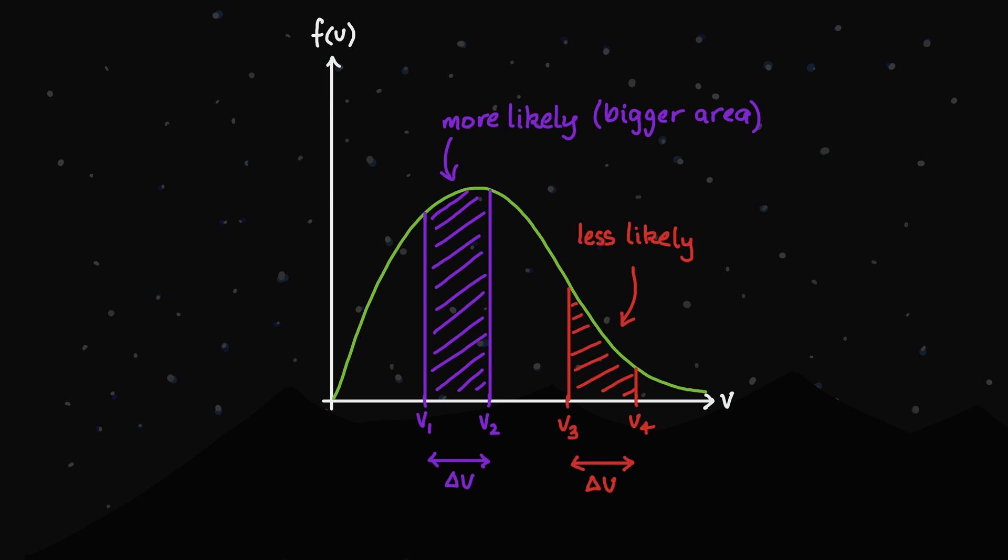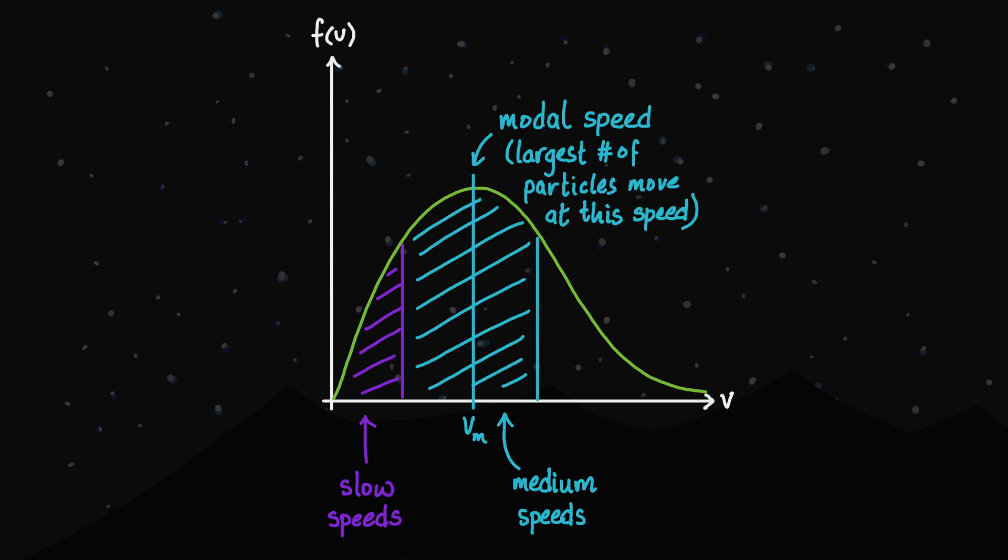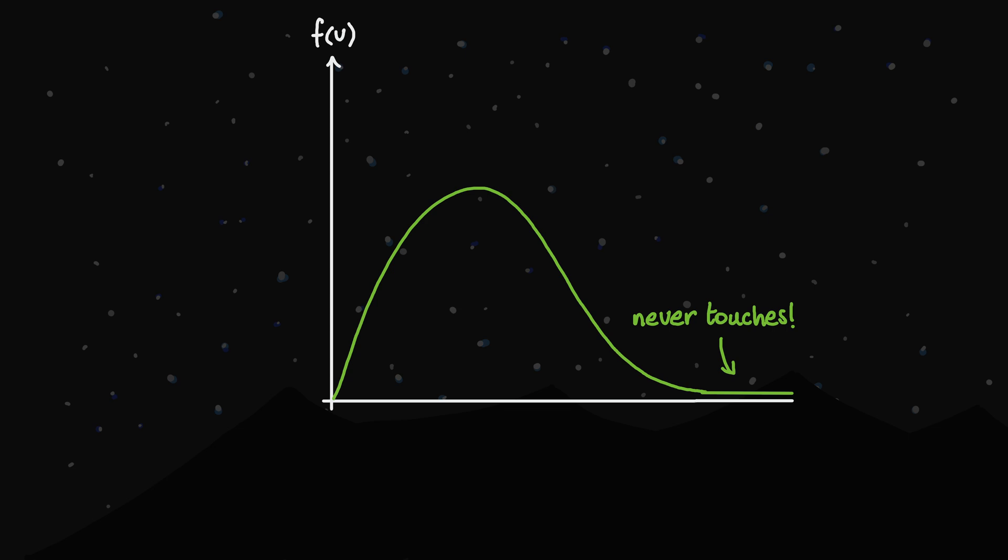Now, the interesting thing about this graph is that it clearly shows some particles moving relatively slowly, a large number of particles moving at this modal speed here, and then fewer and fewer particles moving at faster and faster speeds. This graph never actually touches the horizontal axis, which suggests that we have some small probability of a particle moving really extremely fast, well beyond the speed of light, even.